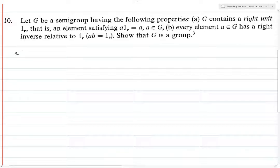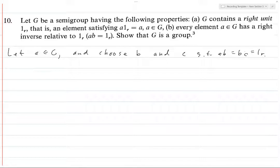So let a be an element of G, and choose b and c such that ab equals bc equals 1_r. That basically means that b is the right inverse of a and c is the right inverse of b. So basically, what we would expect from this is for that c to—well, if it turns out that this is a group, then c is going to be equal to a, but we don't know that yet. So we're just going to have to do some symbol pushing around.